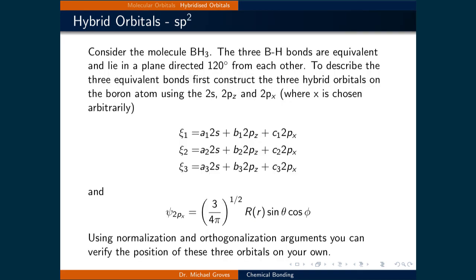Now let's look at the SP2 hybridized orbital. Consider the molecule BH3. The three boron-hydrogen bonds are equivalent and lie in a plane and we know that the SP2 hybridized orbitals are typically directed 120 degrees from each other. To demonstrate this angle, let's construct three hybrid orbitals on the boron atom using the 2S, the 2PZ, and the 2PX orbitals.